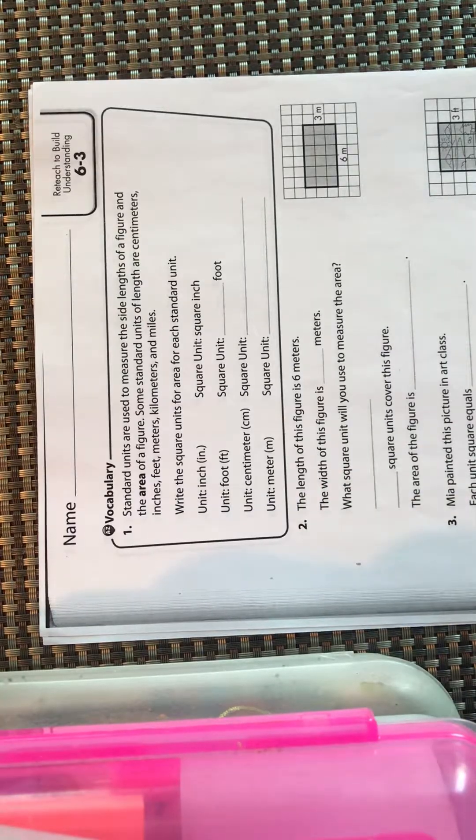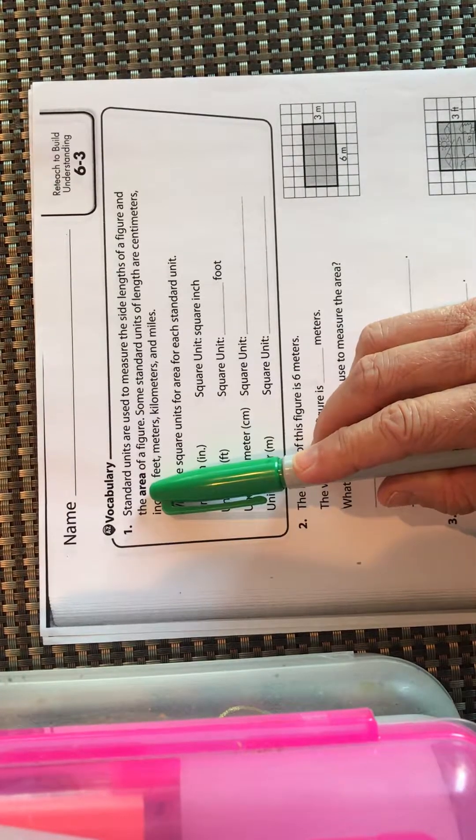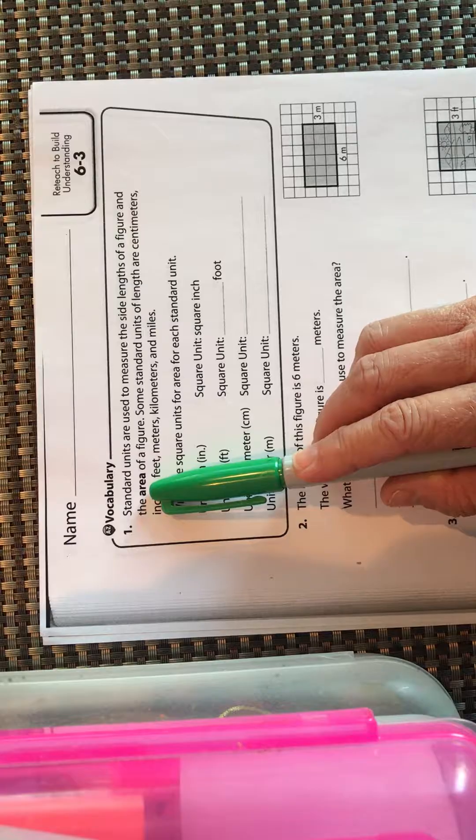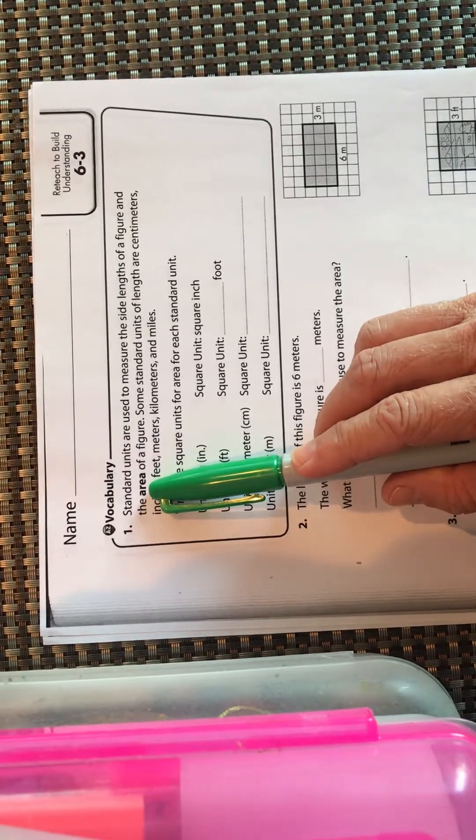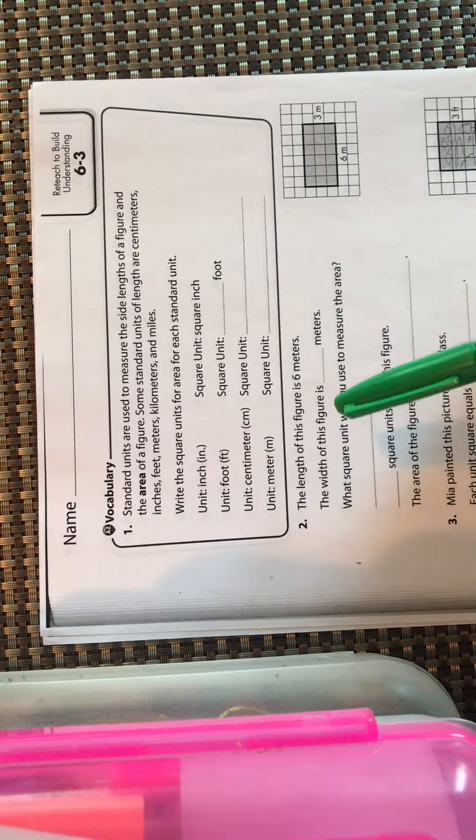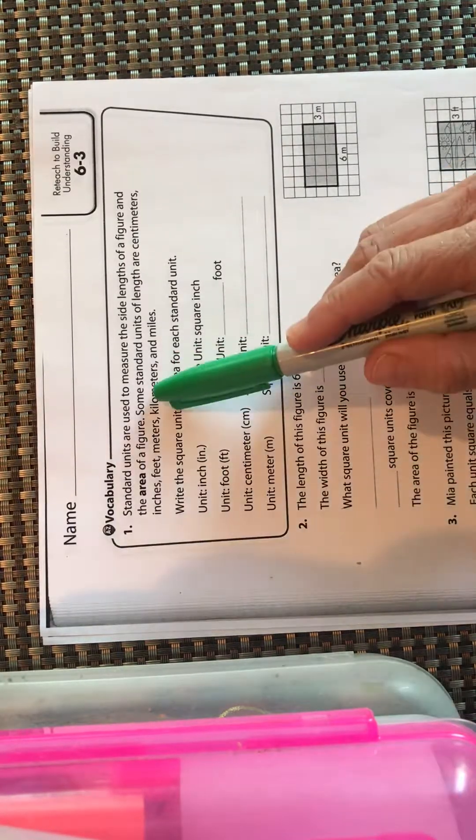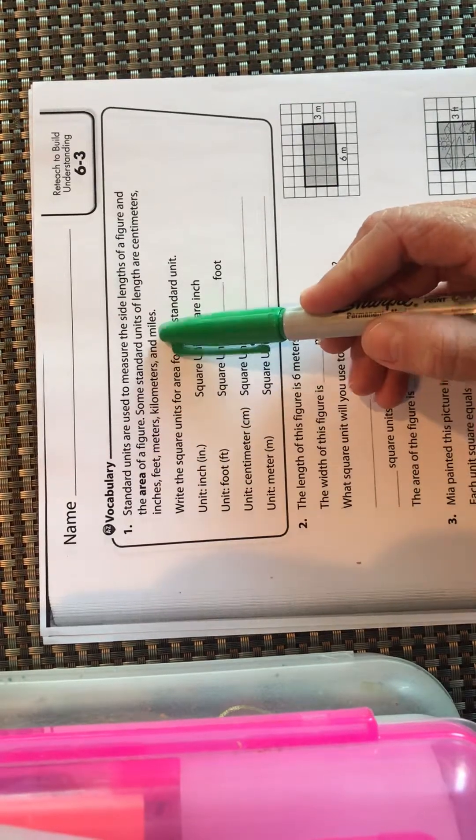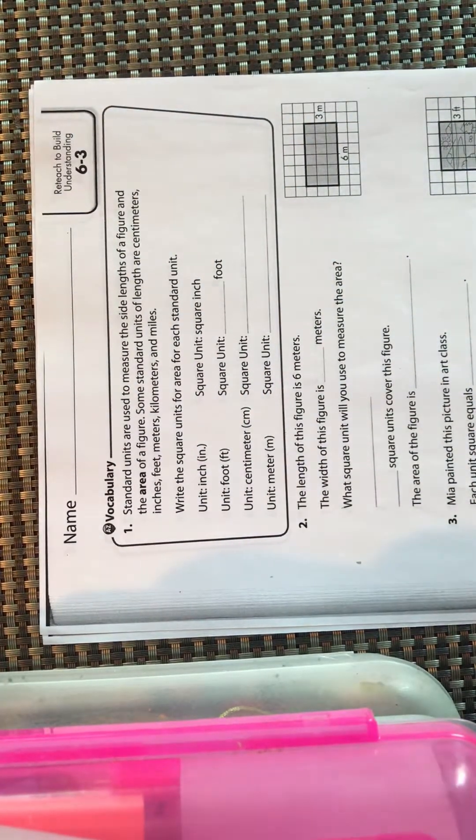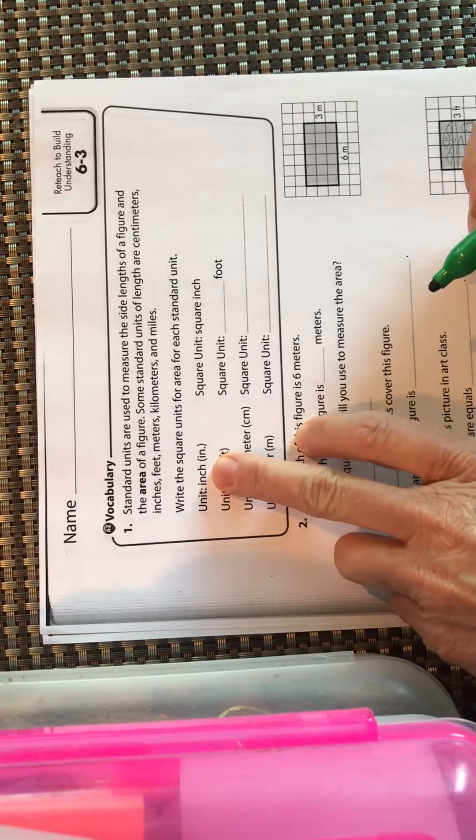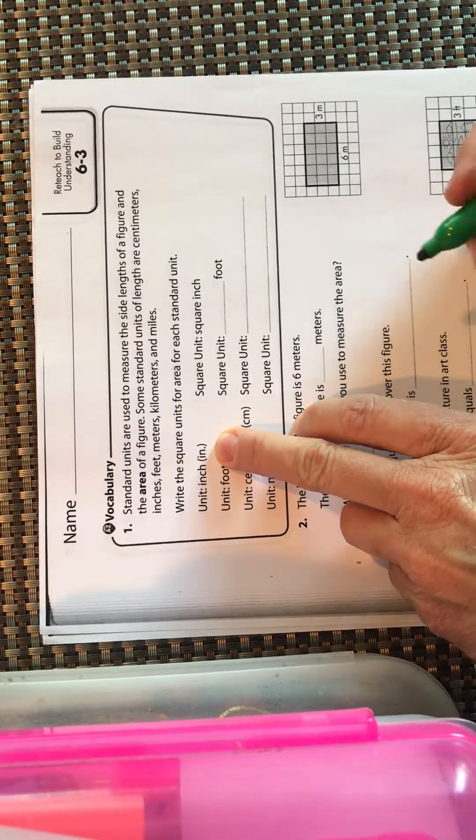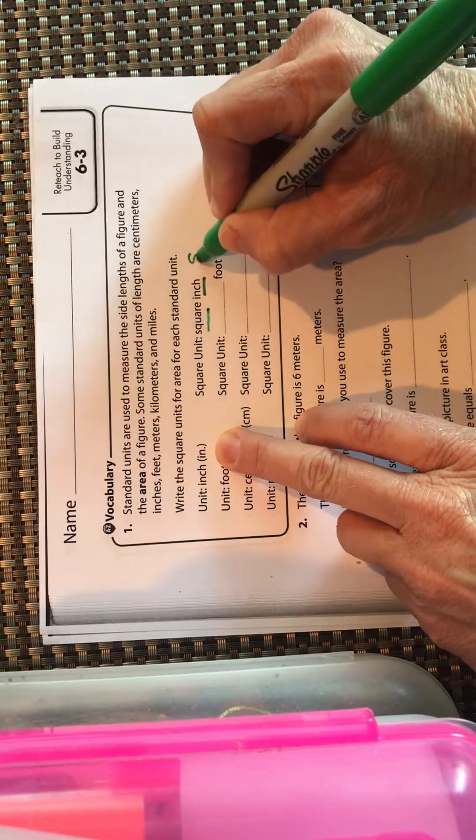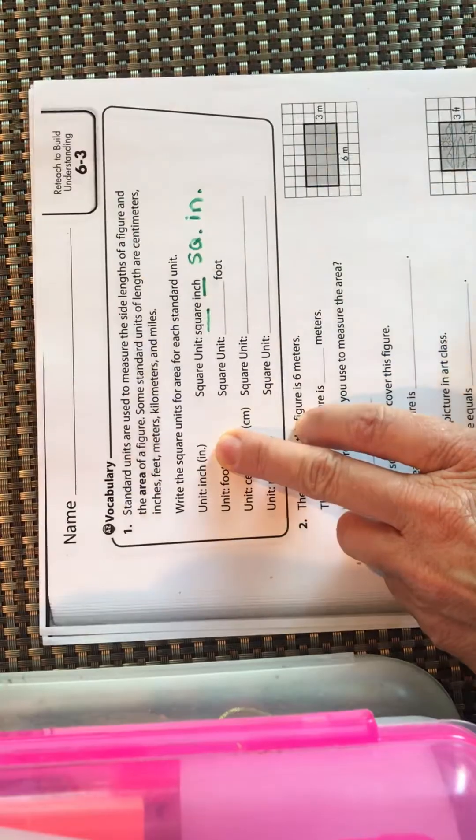Standard units are used to measure the length, the side lengths of a figure, and the area. When we measure to see how long a square is, we use a ruler and say it's three inches long, or we can use a meter stick and say it's two meters long. Some standard units of length are centimeters, inches, feet, meters, kilometers, and miles. So write the square units for each standard unit. If you're talking about square inches, it can be abbreviated as IN, so you have square inches or you can abbreviate it.